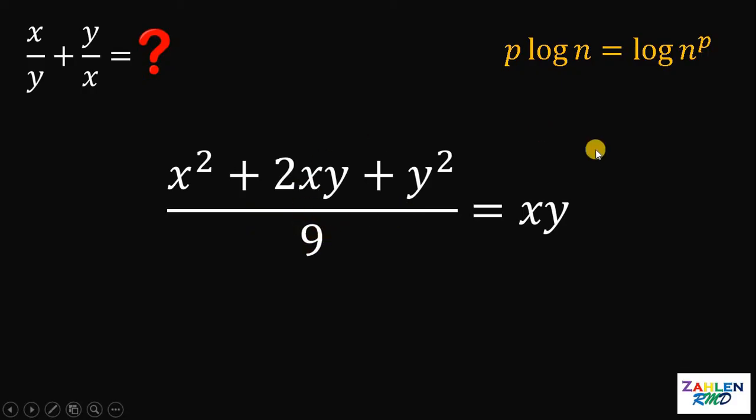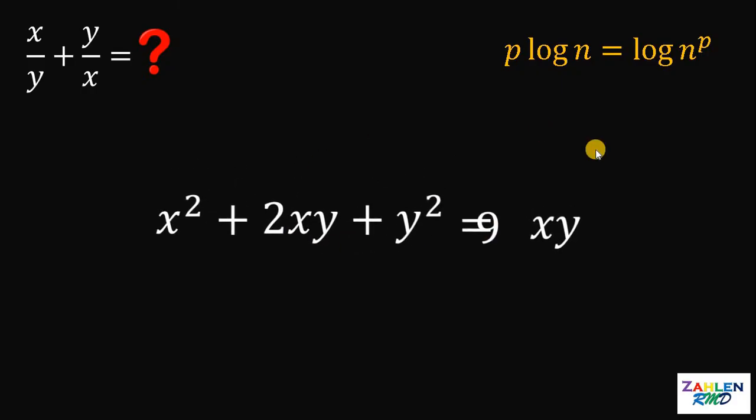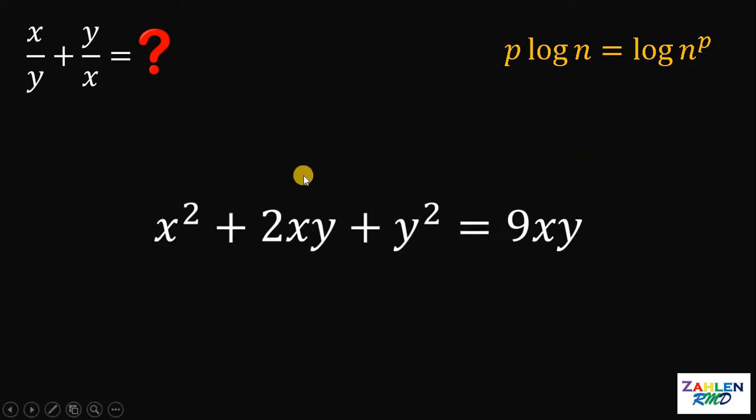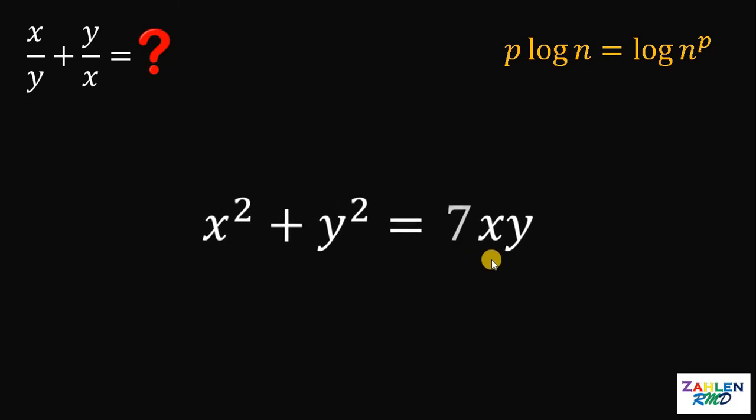Now, let's multiply 9 on both sides. And then, let's subtract 2xy on both sides. The right-hand side now is equivalent to 9xy minus 2xy or simply 7xy.